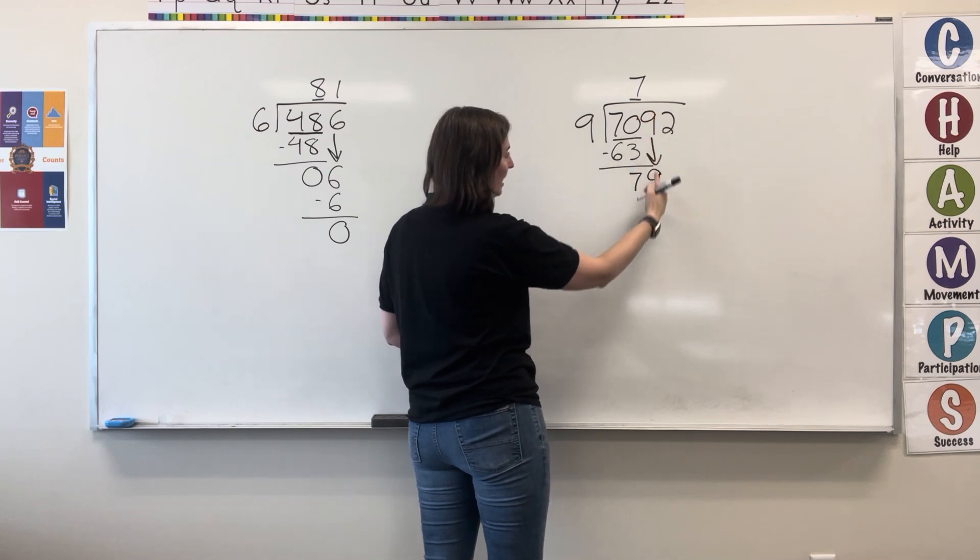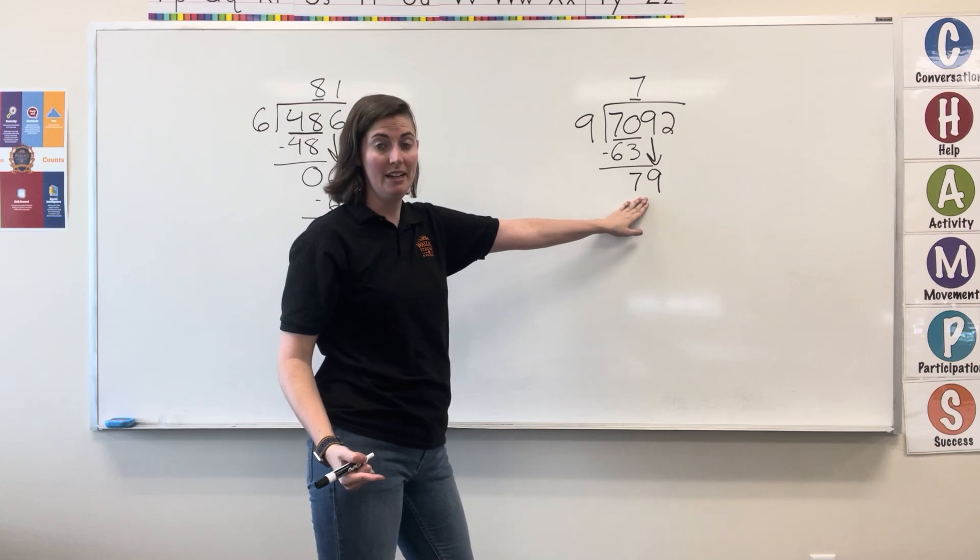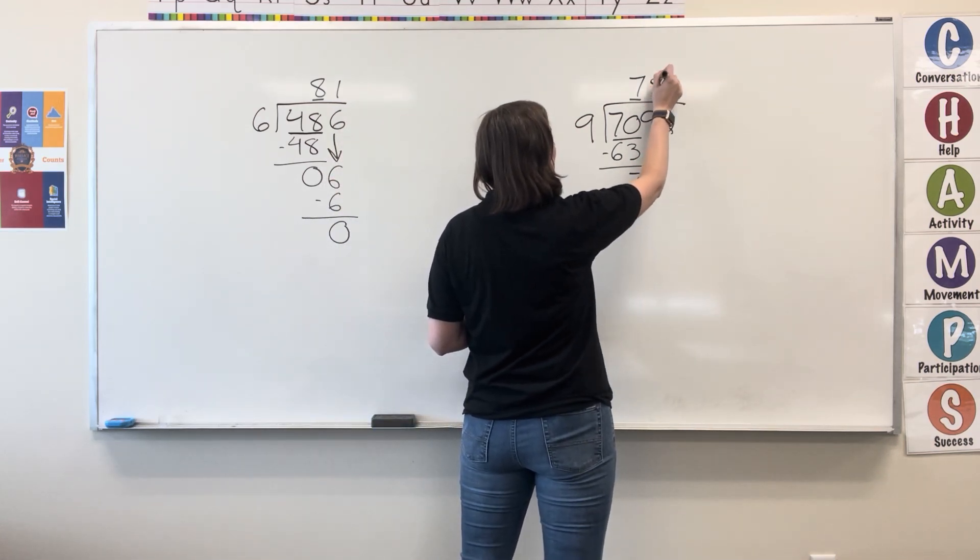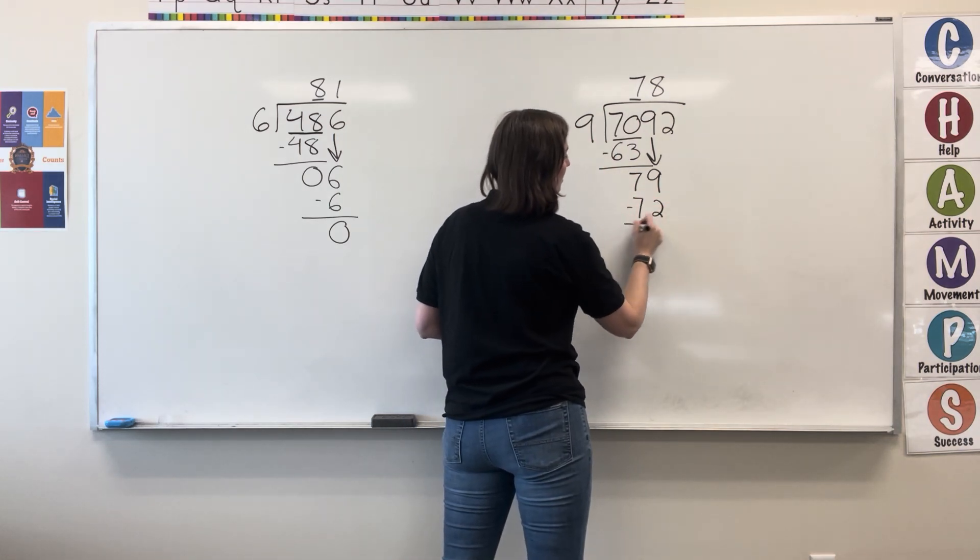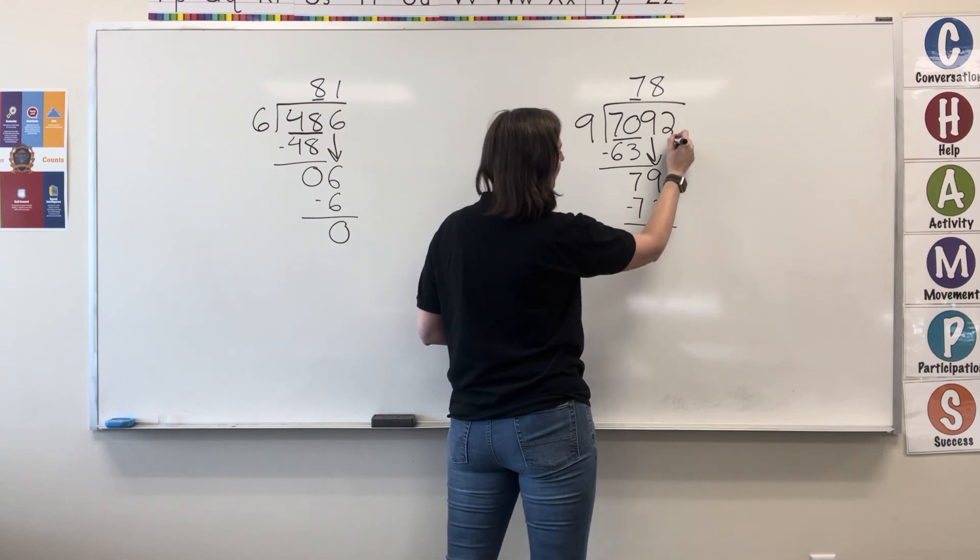Bring down one digit. Now I'm dividing 9 into 79. 9 fits into 79 8 times. 8 times 9 is 72. Subtract. I get 7 again.